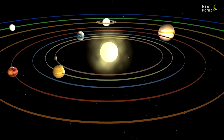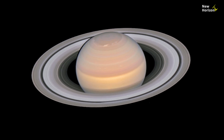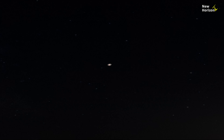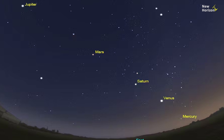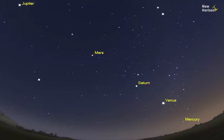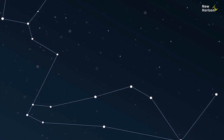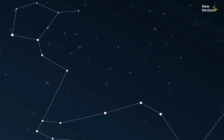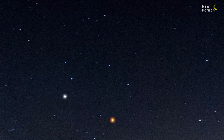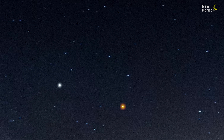Flat earthers don't believe in planets. According to them, there is no such thing as planets — they're just stars. If planets were also stars, they would have the same apparent movement across the sky as stars. But in reality, planets move differently than stars do.